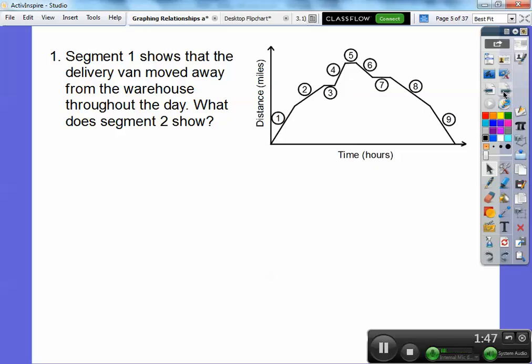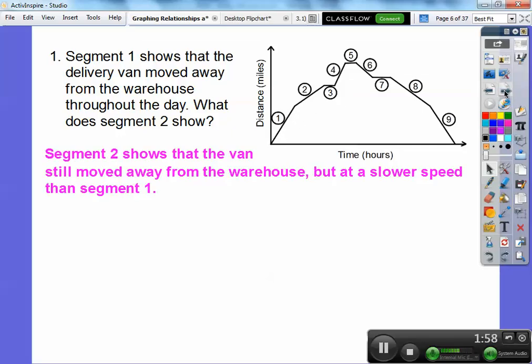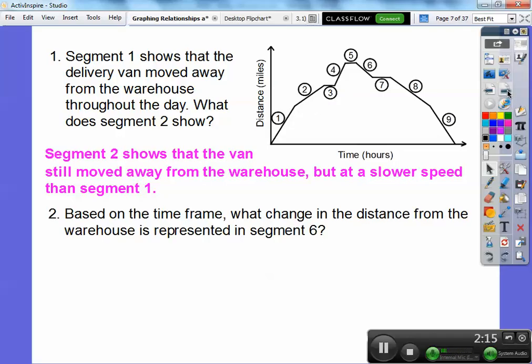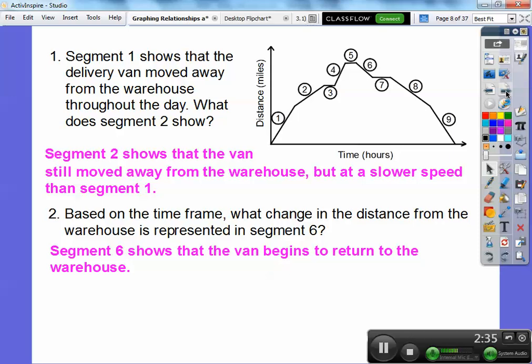So segment one shows that the delivery van moved away from the warehouse throughout the day. What does segment two show? So segment two shows it's still driving away but probably at a slower pace right there. So segment two shows the van is still moving away from the warehouse but at a slower speed than segment one. Because this one is going, the steeper it is, it's going faster. So this one, it's still driving away but not at quite the speed right here. Does that make sense? It's not as steep. So based on the time frame, what change in the distance from the warehouse is represented by segment six. So right here, it looks like it's starting to come back towards the warehouse. So the distance to the warehouse is becoming less. So segment six shows that the van begins to return to the warehouse. So it's heading back in the opposite direction.